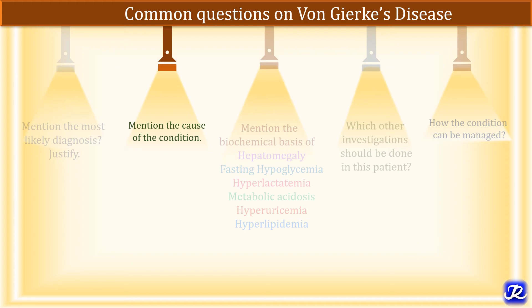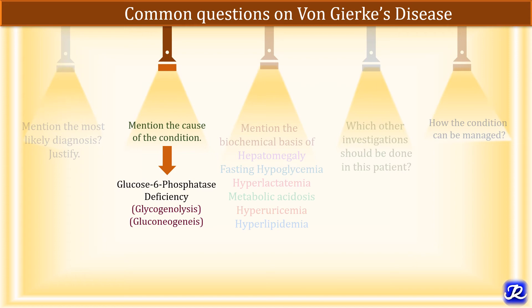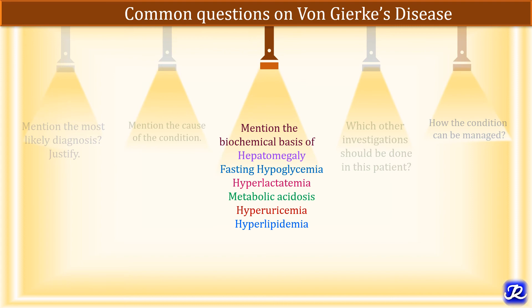The second question is: mention the cause of the condition. Von Gogh disease is due to defect in glucose 6-phosphatase. When glucose 6-phosphatase is deficient, glucose 6-phosphate cannot be converted into glucose. This conversion is very important in both glycogenolysis and gluconeogenesis. This enzyme plays a very important role in both processes, which are important in fasting and starvation. If glucose 6-phosphatase is defective, then in fasting and starvation, the patient cannot synthesize glucose from non-carbohydrate sources, nor can glycogen in the liver be degraded to release glucose. That is why the patient presents with fasting hypoglycemia.